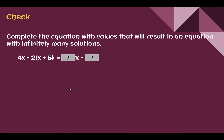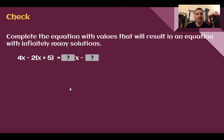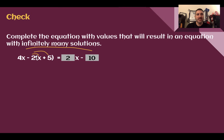Check your understanding: Complete the equation with values that result in infinitely many solutions. Pause the video now and complete this check. Hopefully you found 2x minus 10 — so 2 and then 10. With infinitely many solutions, we need the same coefficient and same constant. Distributing: negative 2 times x is negative 2x; 4x minus 2x is 2x. Negative 2 times positive 5 is negative 10, with nothing to combine it with. So those are the two numbers.